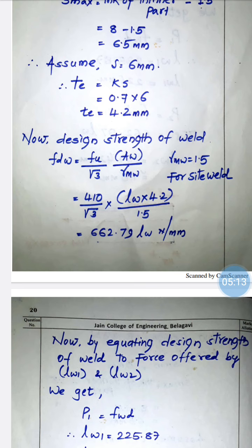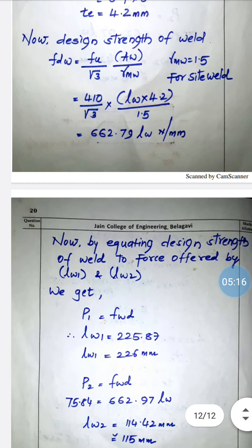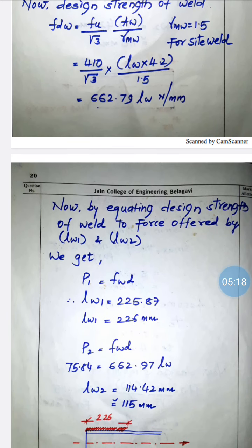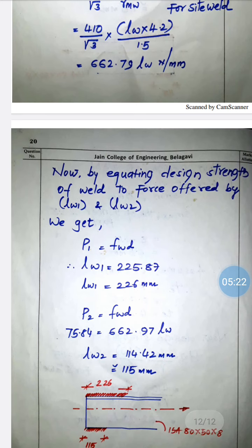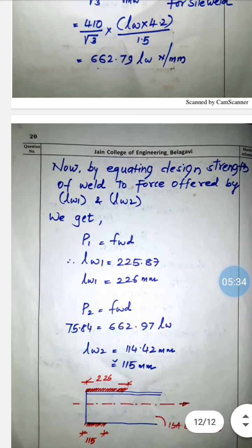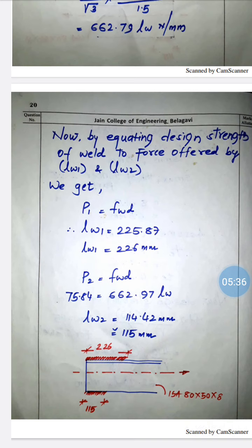Equating the design strength of the weld to the forces P1 and P2: setting P1 = fwd gives lw1 = 225.87mm, which we round up to 226mm or 230mm. Setting P2 = fwd gives lw2 = 114.42mm, which we round to 115mm.